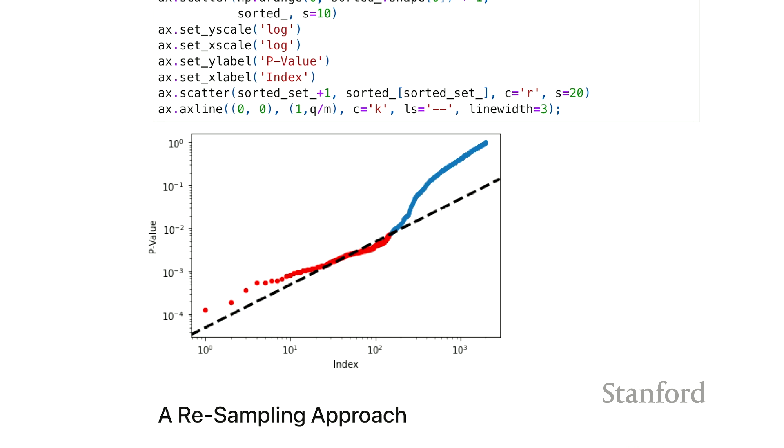If we stopped the first time the p-value was not less than that, we would have stopped here, and that would be nothing. So this is a visual description of the Benjamini-Hochberg procedure.